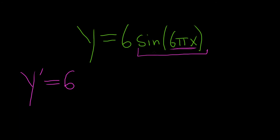So we're going to use the chain rule. Our outside function is sine, and our inside function is 6 pi x. So we take the derivative of sine, which is cosine, and then you just leave the inside piece untouched.